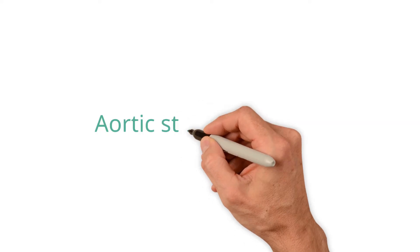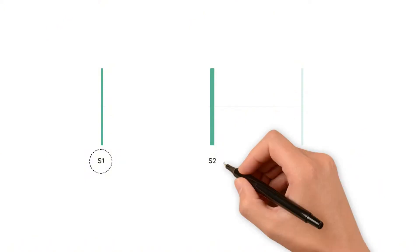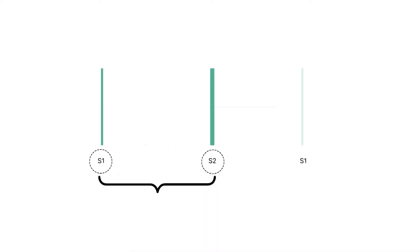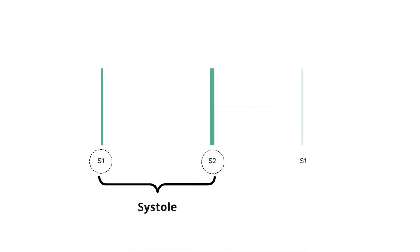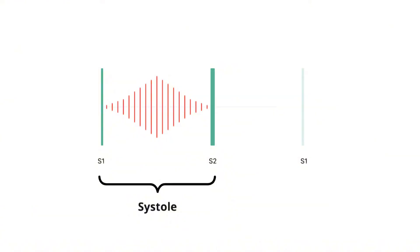Now let's consider the heart sounds produced when auscultating the chest of a patient with aortic stenosis. The first heart sound, S1, corresponds to the closure of the atrioventricular valves, and the second heart sound, S2, corresponds to the closure of the aortic and pulmonary valves. Systole therefore occurs between S1 and S2. Blood flowing through the narrowed aortic valve accelerates and becomes turbulent, which creates a murmur.